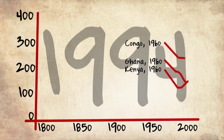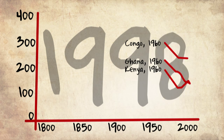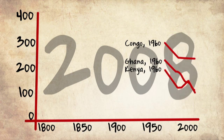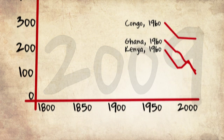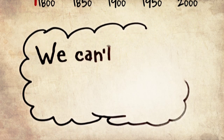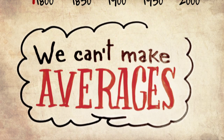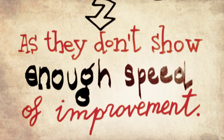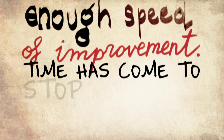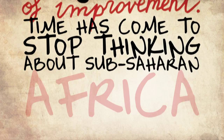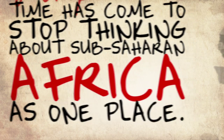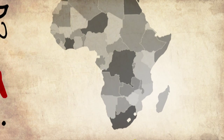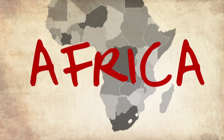Ghana improved very fast. There was a backlash in Kenya, and Ghana bypassed. But then Kenya and Ghana go down together — still a standstill in Congo. It doesn't make sense to average zero improvement with very fast improvement. The time has come to stop thinking about sub-Saharan Africa as one place. The countries are so different, just as we don't talk about Europe as one place.